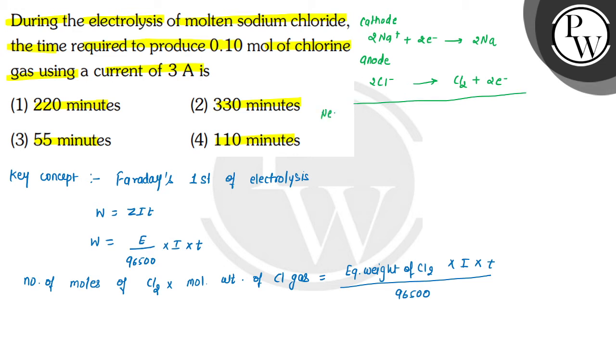So this is our final reaction. We can write net reaction is equal to 2 Na plus plus 2 Cl minus will form 2 Na plus Cl2. So according to this reaction we will put values here.